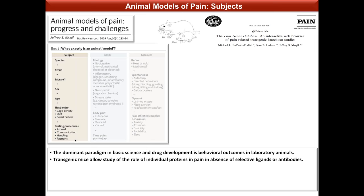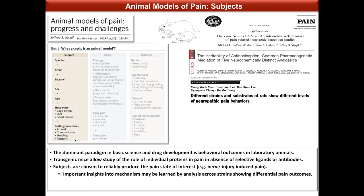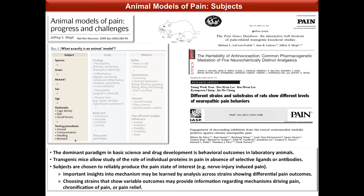Subjects are generally chosen to reliably produce the pain state of interest, but important insights into mechanisms can be learned by analyzing differential pain outcomes across strains. This has been done across mouse strains by Mogil's group and across rat strains or substrains showing different outcomes to nerve injury. Choosing strains with variable outcomes can provide information regarding mechanisms governing pain, chronification of pain, or pain relief — for example, our group demonstrated that engagement of descending inhibition protects against chronic neuropathic pain in Holtzman rats.